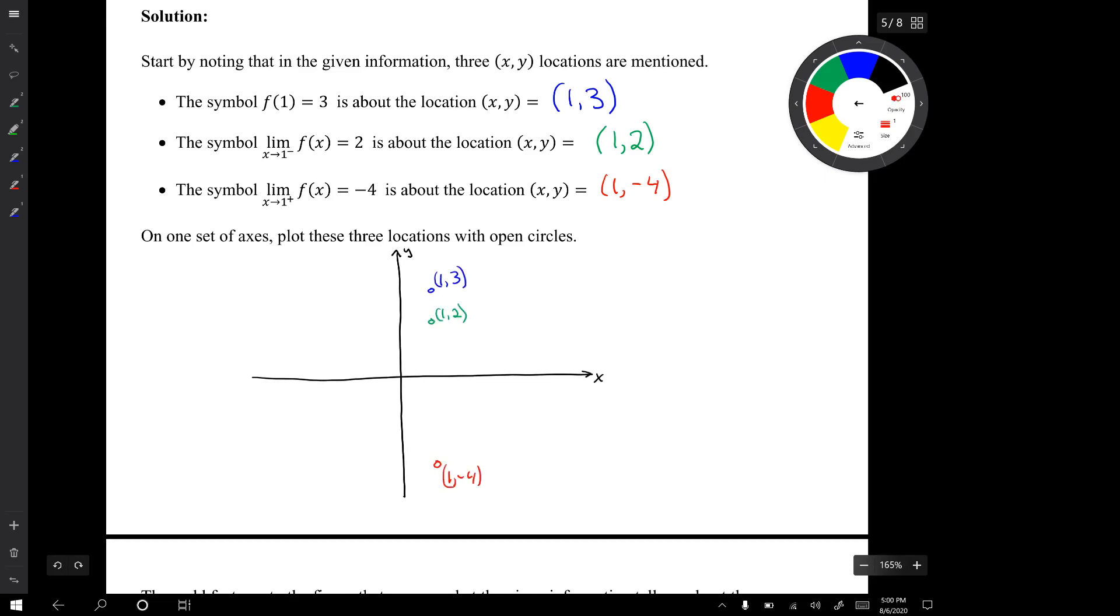So there are three locations. (1, 3), (1, 2), and (1, -4). I just plotted them with open circles because they're just locations that we know we're going to be dealing with.